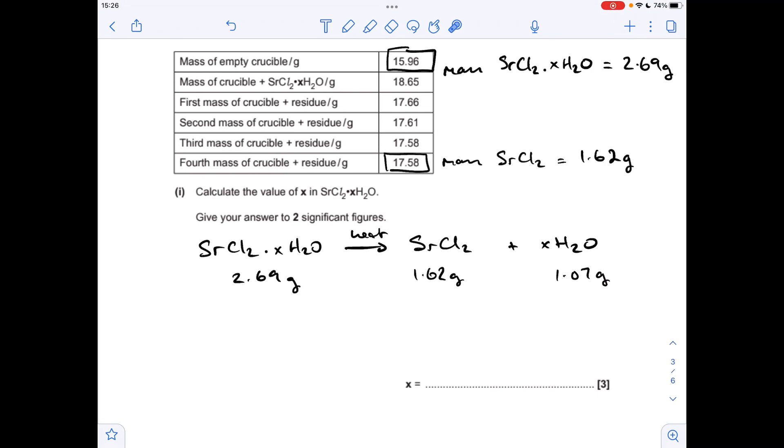All I need to do now is divide both of these by their respective MRs to get the moles of each chemical present and then just divide by the smallest to get the ratio. There's my two mole values. Remember to keep these to three significant figures at an absolute minimum. All I need to do now is divide by the smallest, so I'm dividing that by itself and that by that.